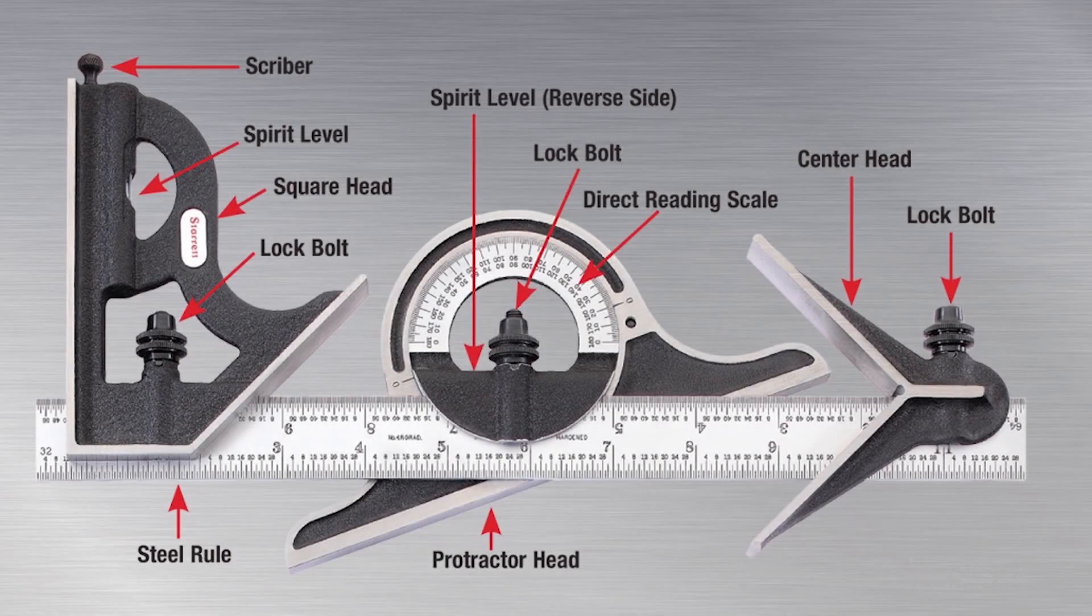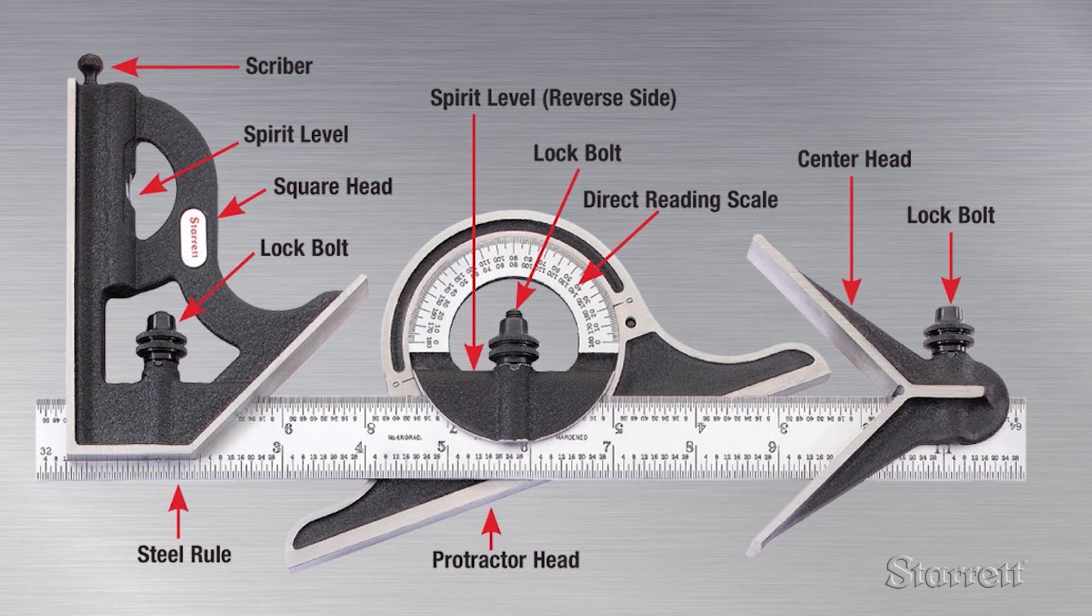While used most commonly in woodworking, a combination square set with interchangeable square, center, and protractor heads is also a versatile tool in metalworking.